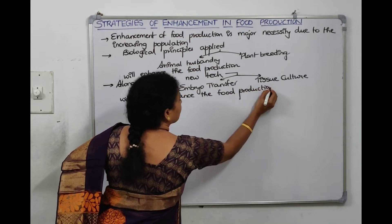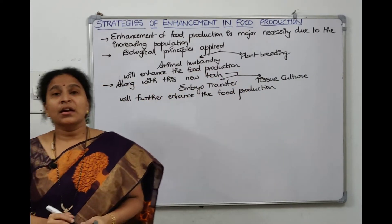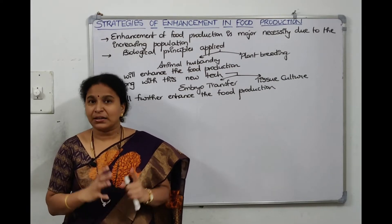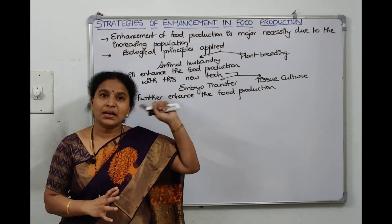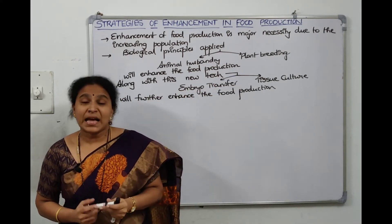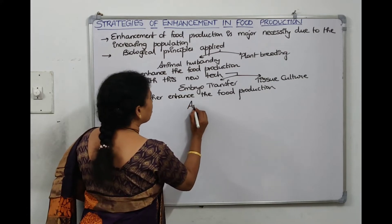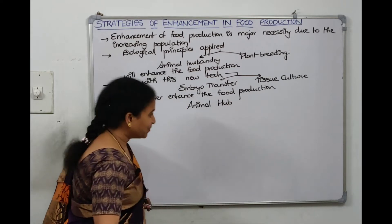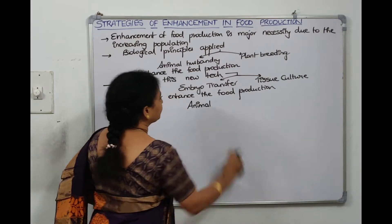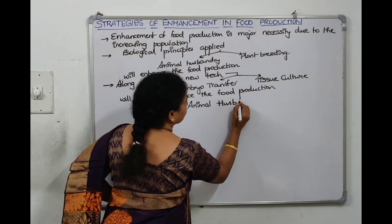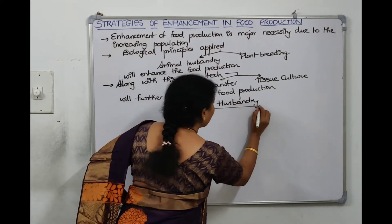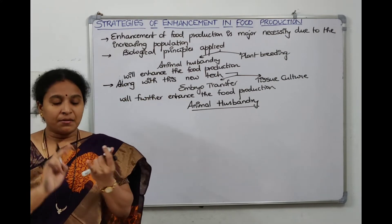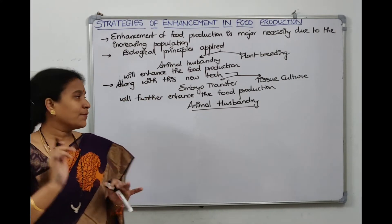Now, what is animal husbandry? We'll talk about animal husbandry first, then plant breeding in later classes. Animal husbandry is an agricultural practice of breeding and raising animals or livestock.